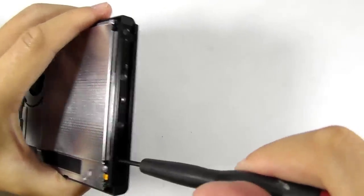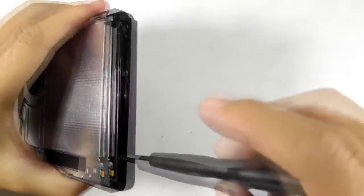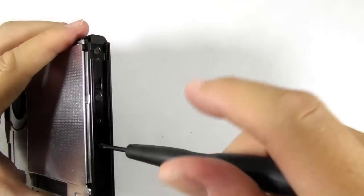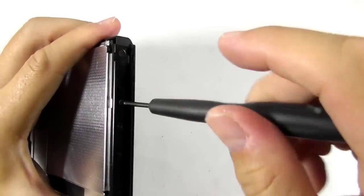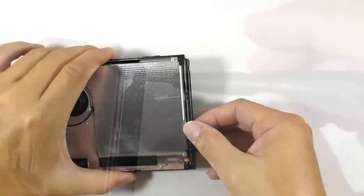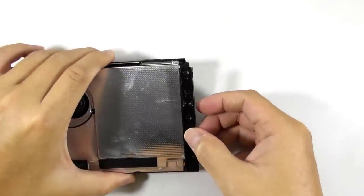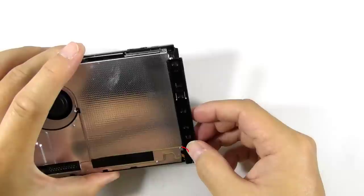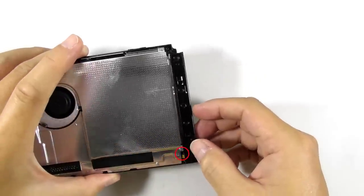Then remove the remaining screws on the left Joy-Con slider. Then you can take apart the Joy-Con slider from the main unit, but be very aware of the flex ribbon cable. Don't break it.